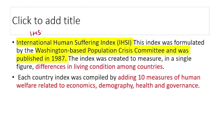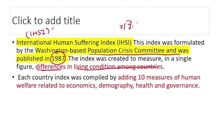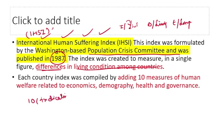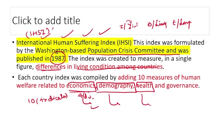The International Human Suffering Index (IHSI) was formulated by the Washington-based Population Crisis Committee and published in 1987. It measures differences in living conditions among countries. It is calculated using 10 measures across 4 dimensions: economic conditions, population, health, and governance of the country.